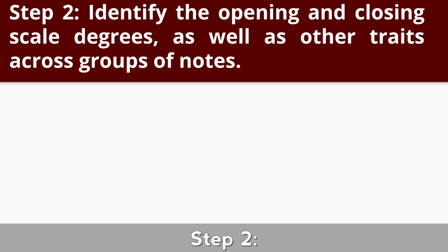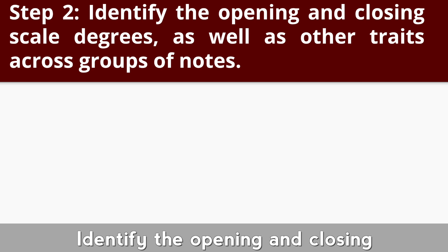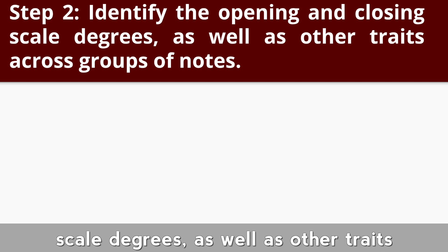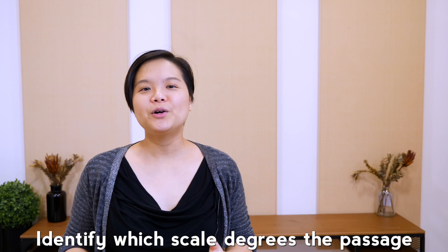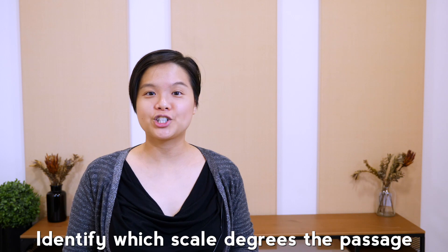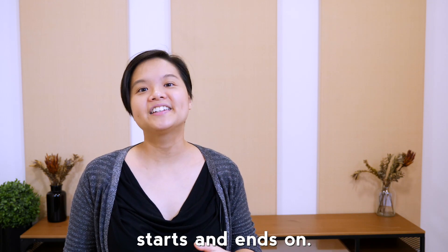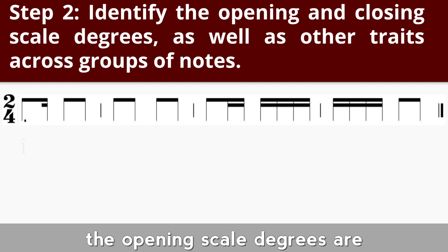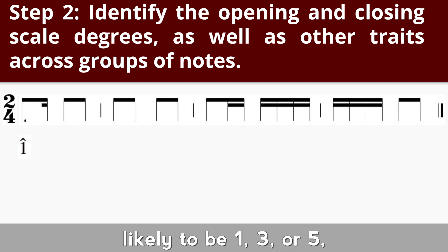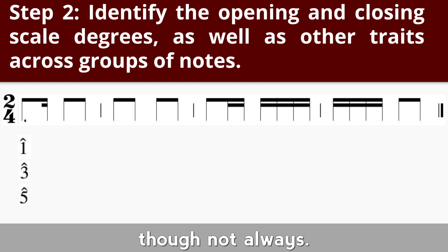Step two: identify the opening and closing scale degrees, as well as other traits you may observe across groups of notes. Identify which scale degrees the passage starts and ends on. For a non-modulating tonal passage, the opening scale degrees are likely to be one, three, or five, though not always.